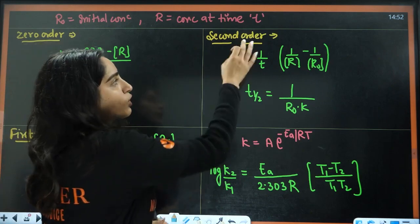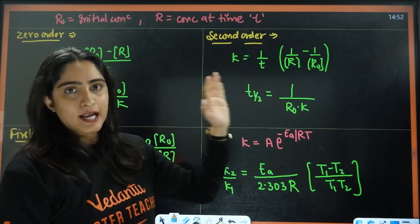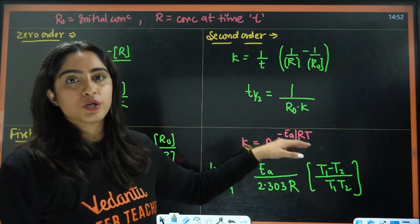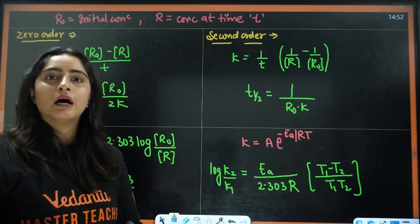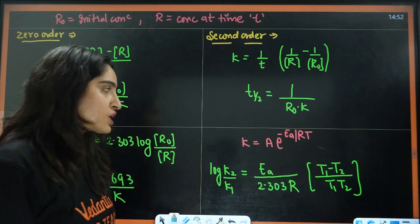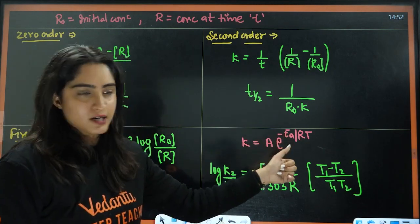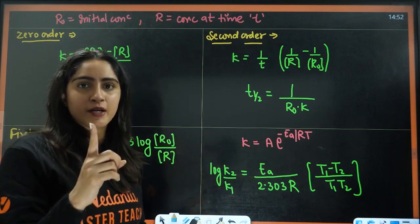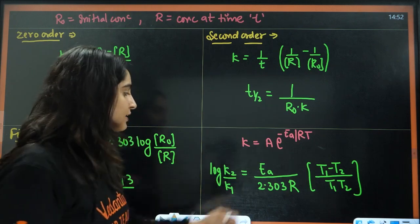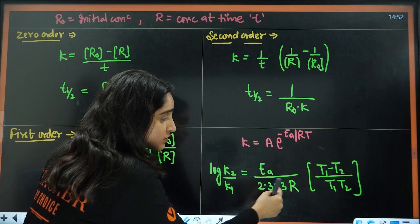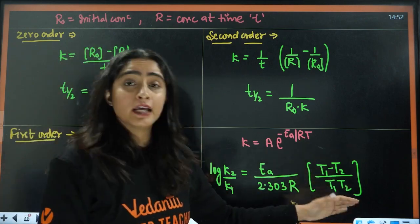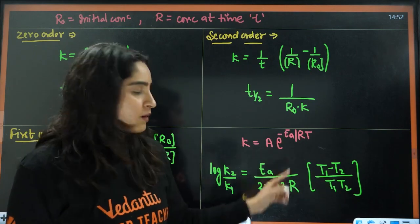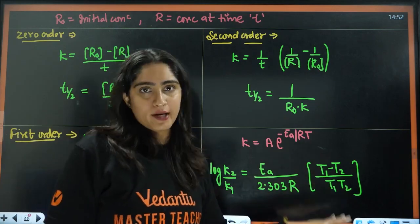Next, we have second order reaction. This is the relation between rate constant, time, and concentration for second order. For half-life of second order, t½ equals 1 divided by (initial concentration times K) — so it is inversely proportional to the initial concentration. Next, we have the Arrhenius equation: K equals A times e raised to minus Ea divided by RT, where A is the Arrhenius constant and Ea is the activation energy. Applying this for two temperatures T₁ and T₂: log(K₂/K₁) equals Ea divided by 2.303R times (T₁ minus T₂) divided by (T₁ times T₂). This formula is very important for your numericals.